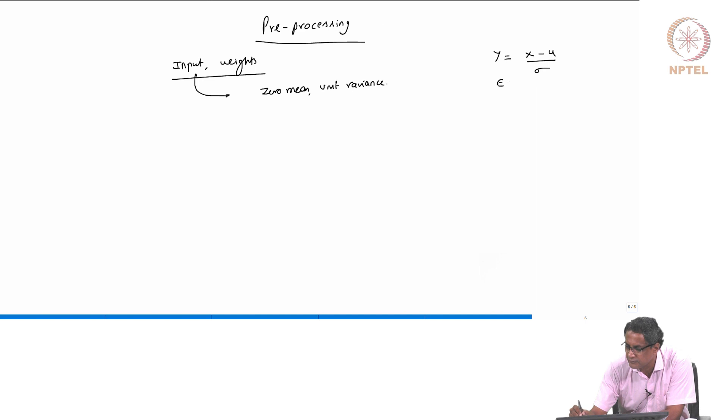This will make sure that expectation of y is 0 and then expectation of the variance of y, which is variance of y, is simply equal to 1, because expectation x minus mu square, that is sigma square, sigma square by sigma square. So, this is the simplest thing which you can do, but what typically happens is, at the input, you might be able to do this and you typically do this.